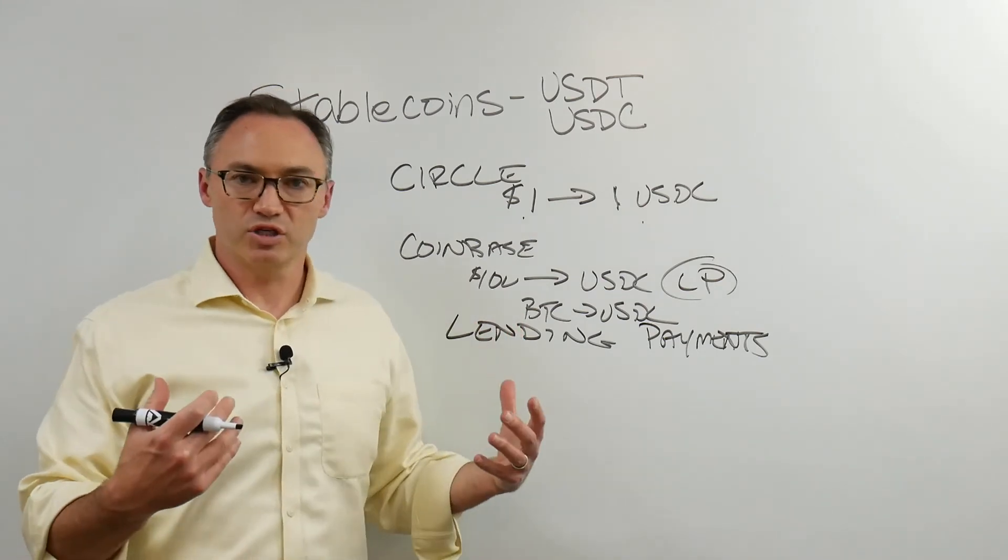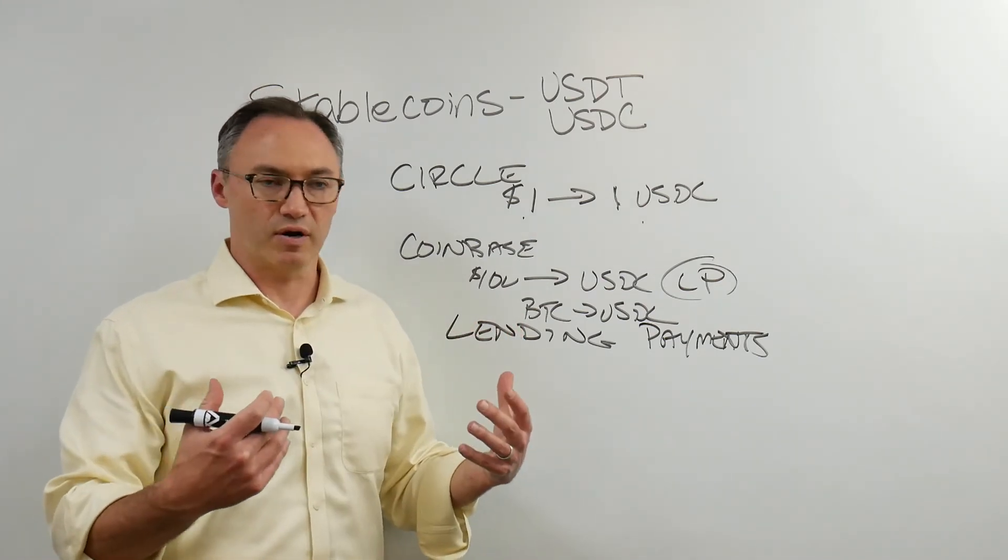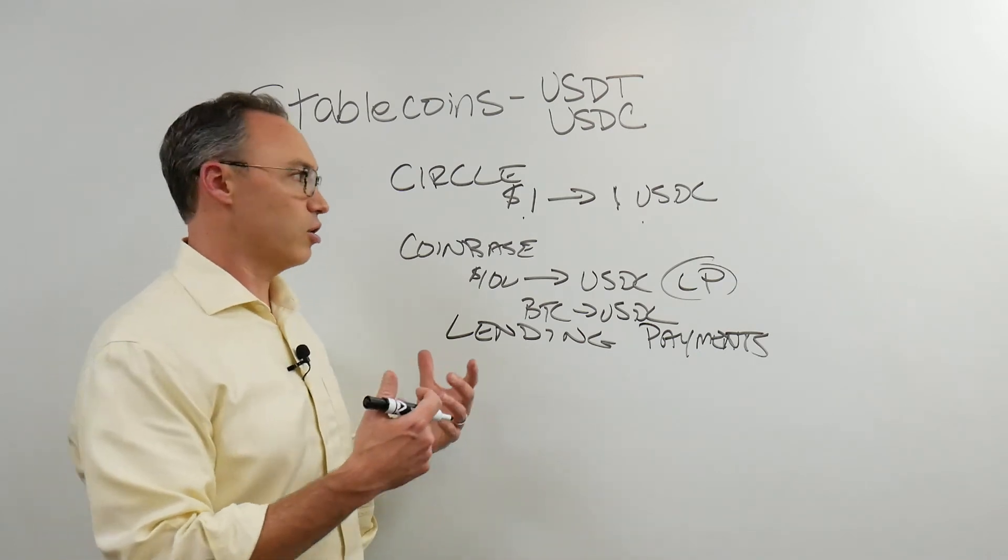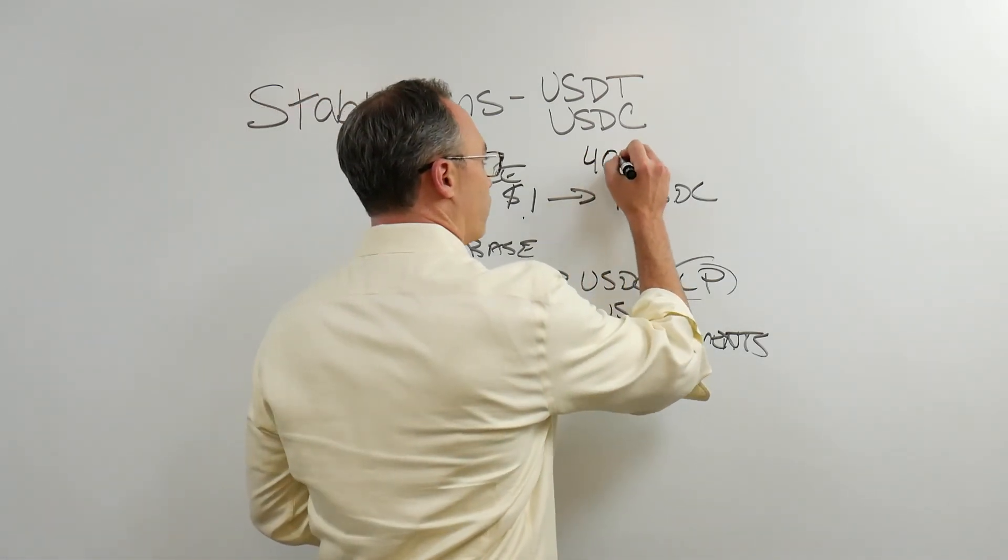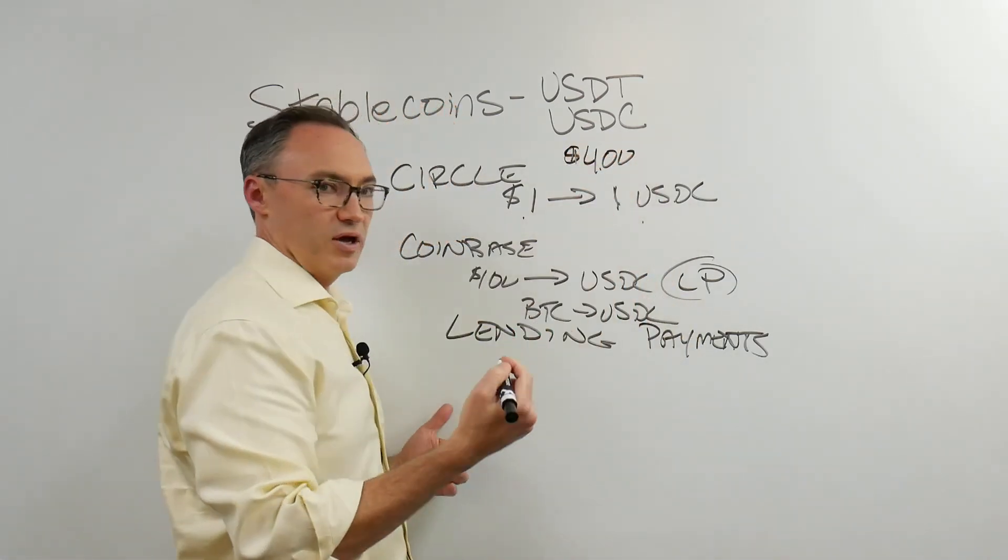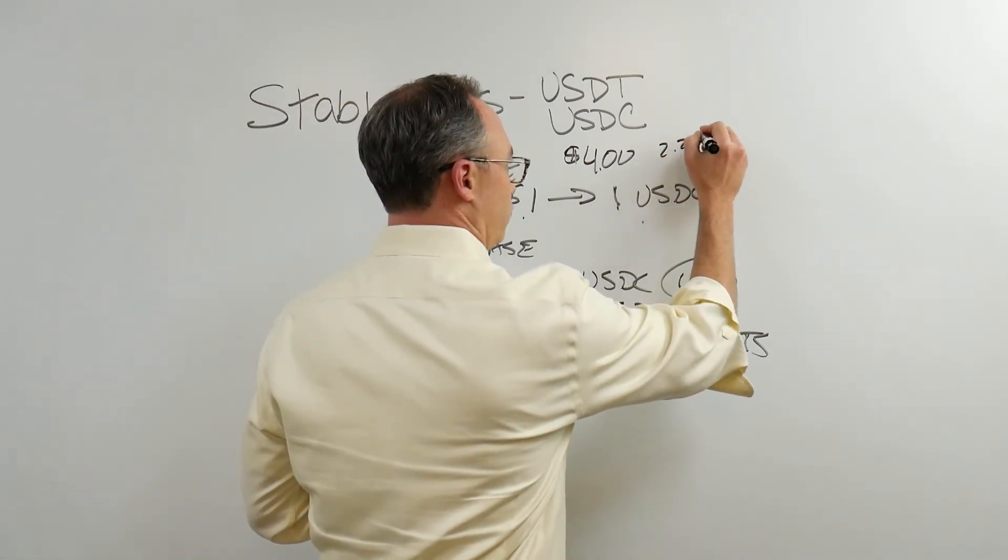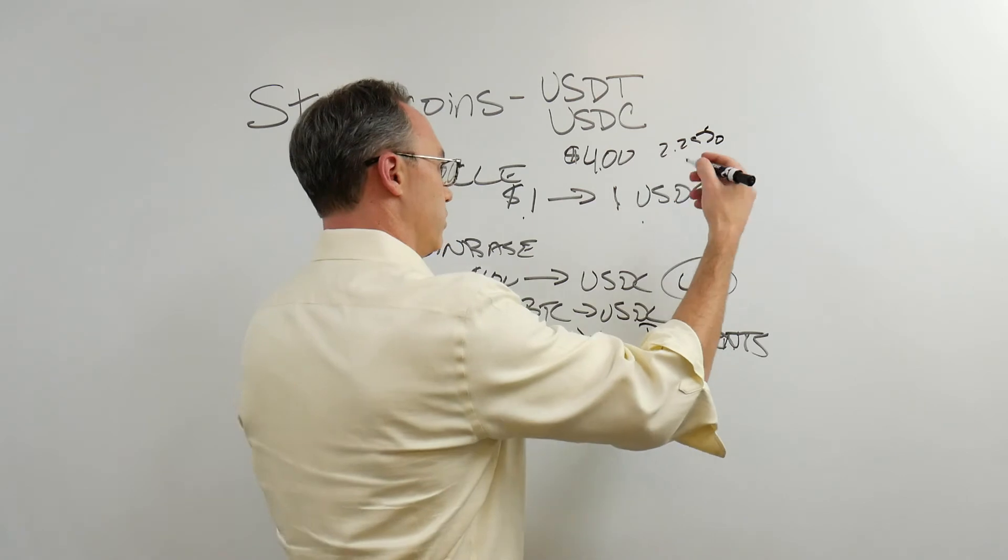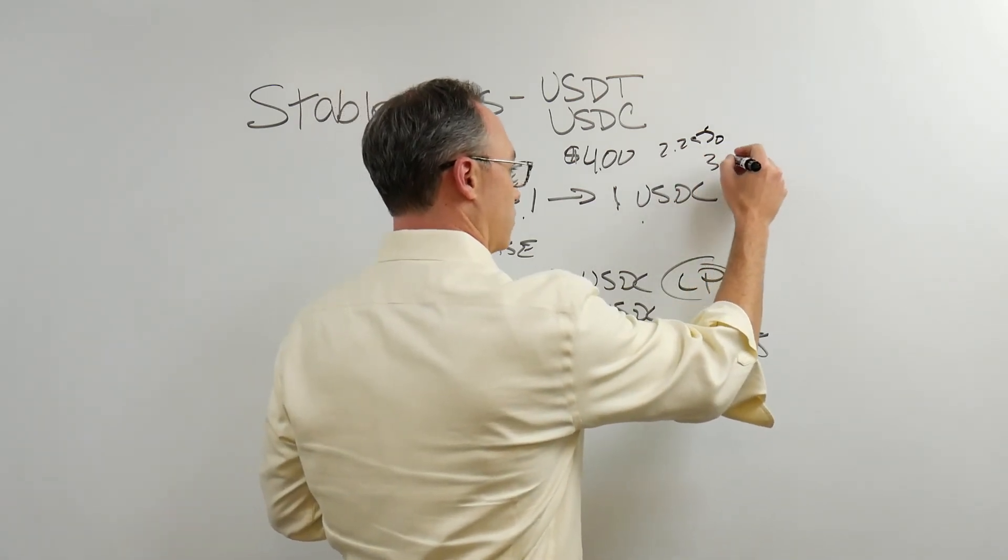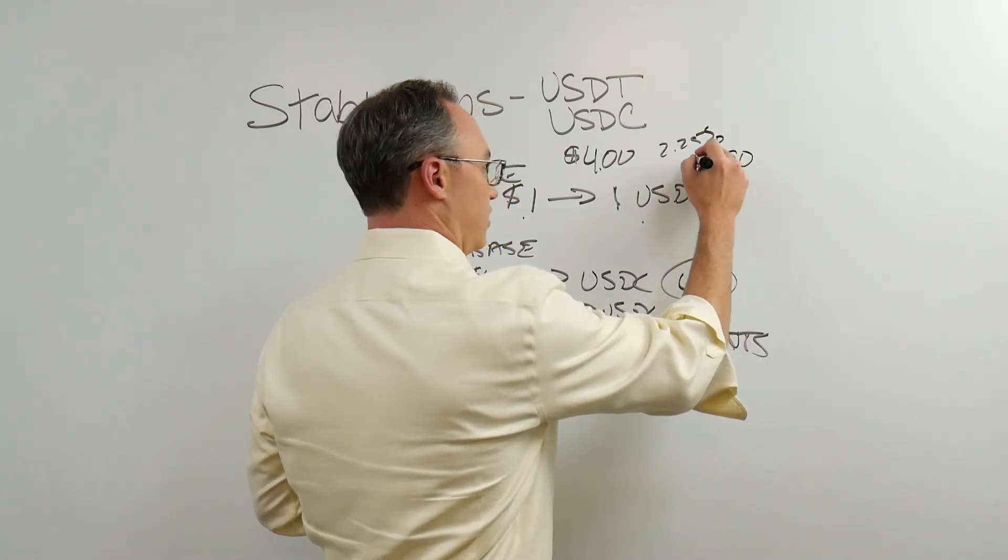There are also applications being built to accept it as payment. So now I can go buy my coffee. And let's say my coffee is $4. And if I paid with a credit card, the credit card company might charge two and a quarter percent, the other charges. So the coffee shop might only get $3.90 out of that.